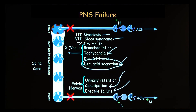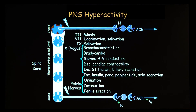And in men, erectile failure. Hyperactivity is just the opposite: there's too much saliva, too much tear production, a tendency towards bronchoconstriction — that means wheezing — and the heart rate goes down. With a cholinergic agonist such as bethanecol or urecholine, there's a tendency towards urination and defecation.